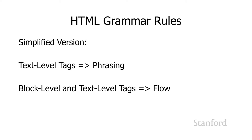Certain tags are only allowed to contain phrasing, meaning text and text level tags but not block level tags — so you can have bold and italic, but not a paragraph. If something can contain flow, you can have bold, italic, paragraph, table, and h1 through h6 tags — basically any of the tags that create content on the web page, excluding structural tags like HTML, head, and body.